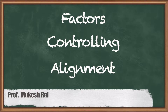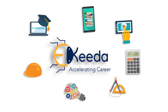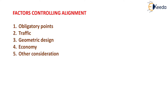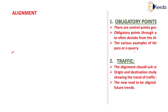Hello students, today we are going to study Factors Controlling Alignment. The various factors are: the first one is obligatory point, the next one is traffic, another one is geometric design, the next one is economy, and the last one is other consideration. We will see each and every factor in detail, starting with the first factor, that is obligatory points.